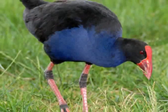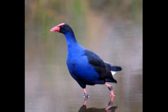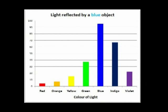A blue object reflects blue light, but also smaller amounts of the other colours next to it on the spectrum. The light reflection graph might look something like this.